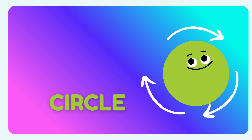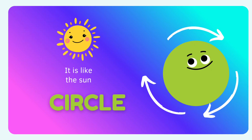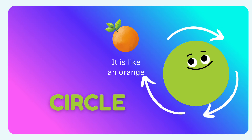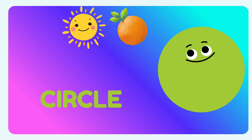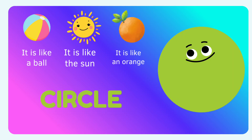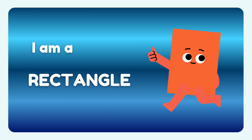For example, like a ball, like the sun, and like an orange. All these objects can be seen in the form of a circle. I am a rectangle.